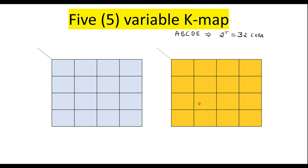That is why here I have shown 2 Kmaps. In the 2 Kmaps, we will consider the variable a: for this Kmap, variable a is equal to 0, and for this Kmap, variable a is always equal to 1. The remaining variables b, c, d, e are written on both Kmaps. So total b, c, d, e and a — that is 5 variables.